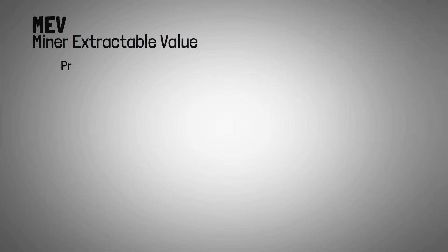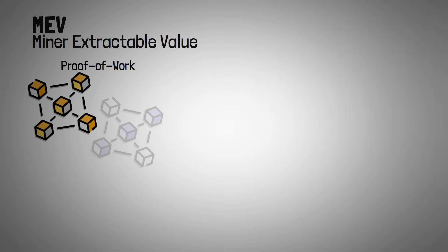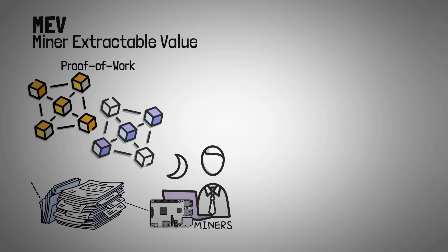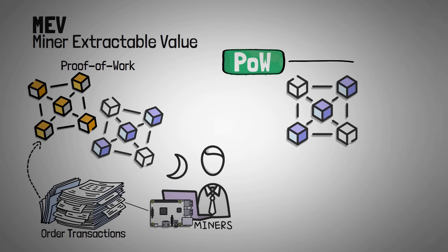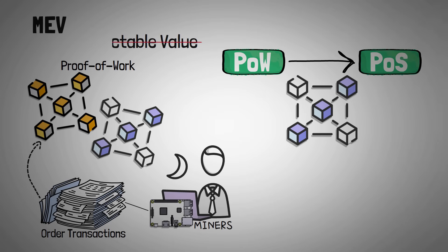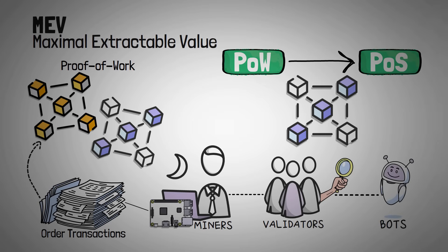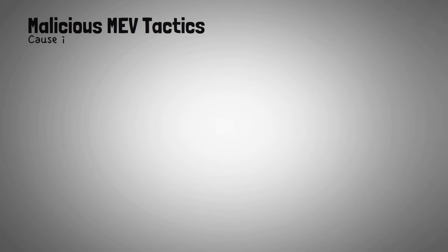This is the core of MEV. Originally, MEV stood for Miner Extractable Value because in proof-of-work blockchains like Bitcoin or Ethereum before the merge, miners were the ones ordering transactions and extracting value. However, after Ethereum switched to proof-of-stake in 2022, the term was updated to Maximal Extractable Value to reflect that it's not just the miners, but also validators and even searchers or bots who can extract value. As you can imagine, some MEV tactics aren't so good for the blockchain because they can cause innocent users like you and I to lose money.